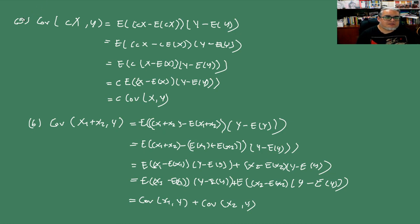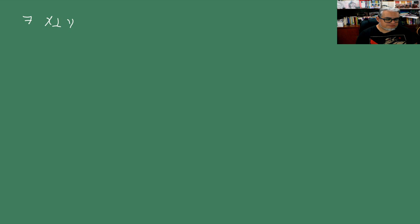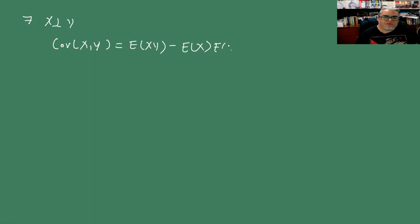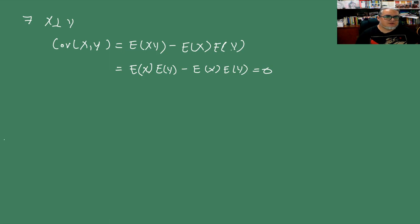Propiedad 7: si X y Y son independientes, por la propiedad 1 Cov(X,Y) = E[XY] − E[X]E[Y]. Pero por independencia, E[XY] = E[X]E[Y], entonces la covarianza se anula.